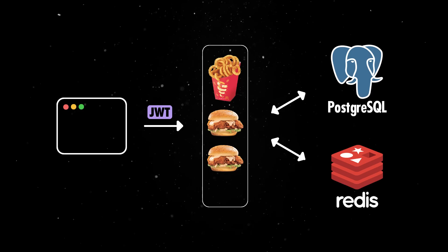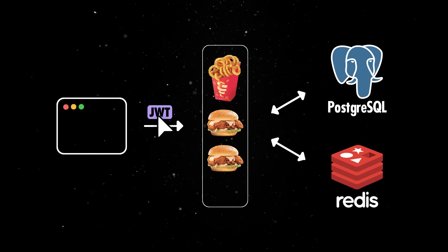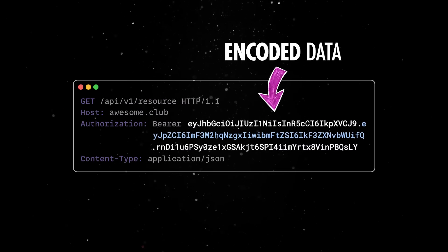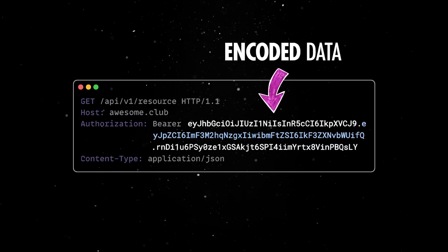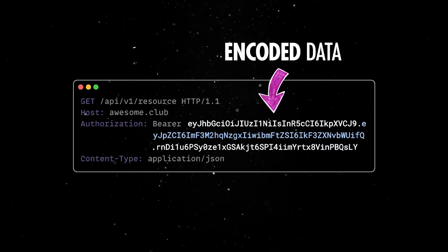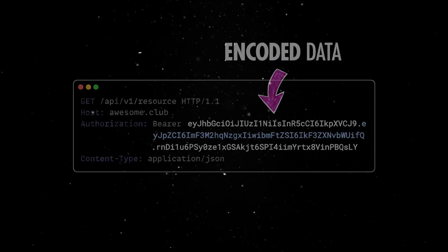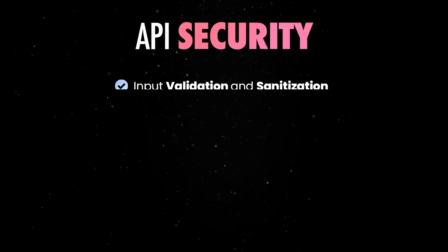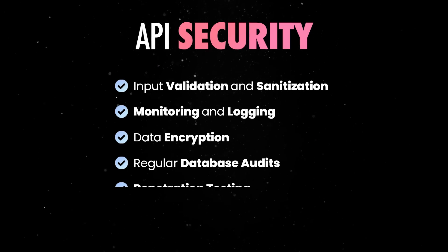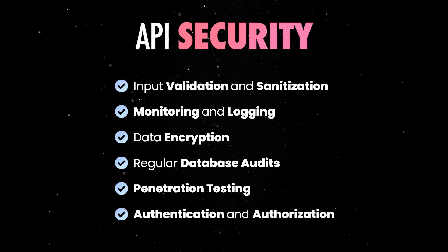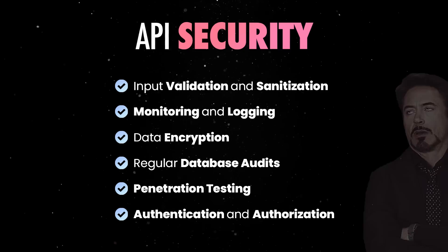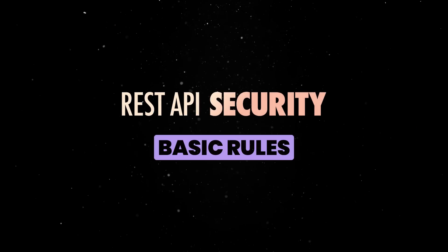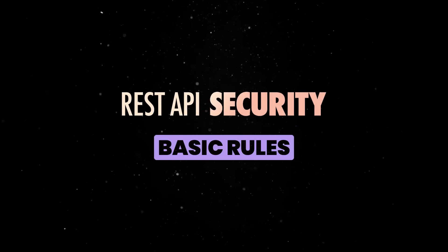Since servers do not maintain client context, each request sent from the client must contain all the information necessary to process it. This is a good time to take a brief detour into securing your APIs. Your services should follow all best practices when it comes to security — there are a few basic rules everybody should know and follow.